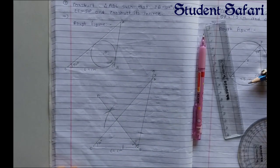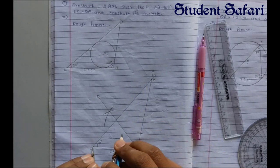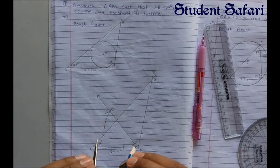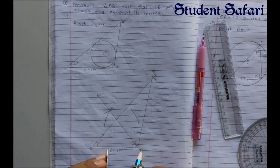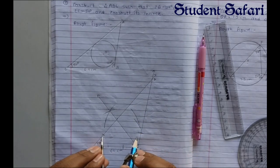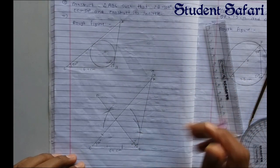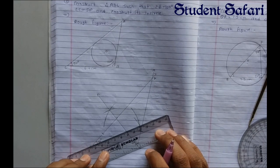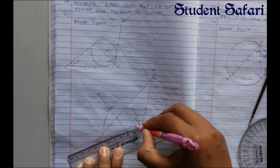Similarly, draw the bisector of angle C. Take some distance, mark on segments AB and BC, then take a greater distance and using those two points mark intersecting arcs. After getting the new point, connect it to point C to get the bisector of angle C.